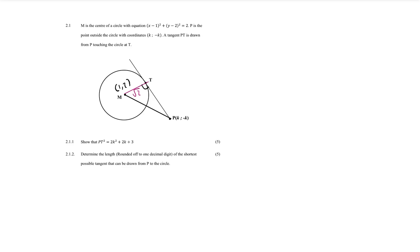What we notice is that if I draw a line from P to M, that's going to be the hypotenuse of a right-angle triangle, meaning I can use Pythagoras. I have point P and point M, so I can find the length of PM, and then using that I can find PT² using Pythagoras.